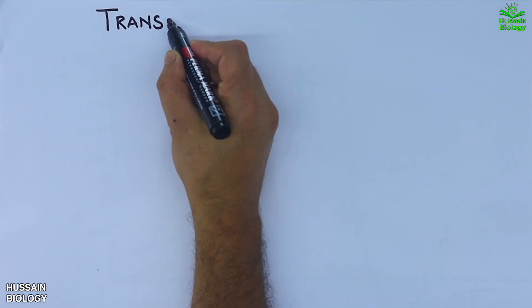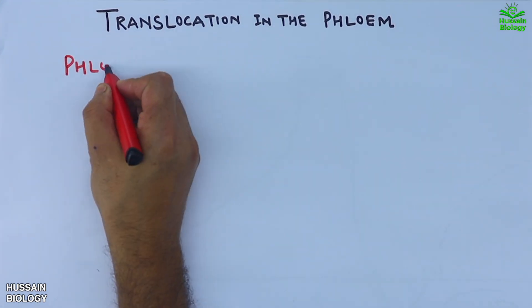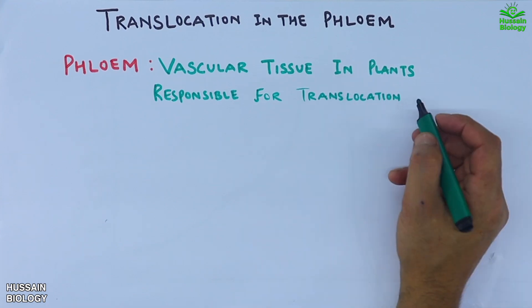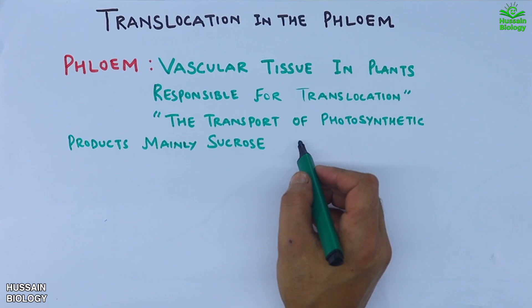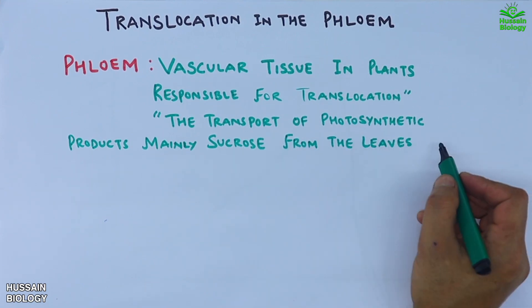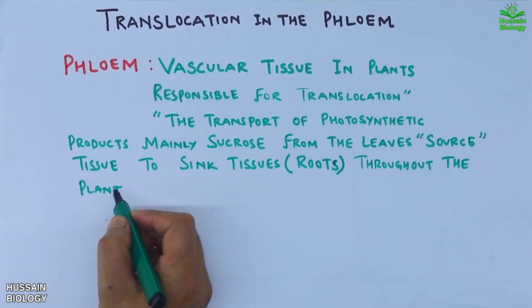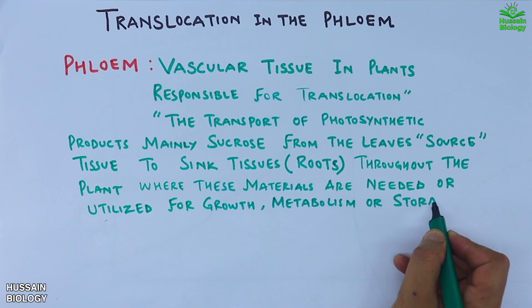In this video we are going to discuss the translocation in the phloem. It involves the transportation of organic compounds from source tissues to the sink tissues within the plant body. Phloem is the vascular tissue responsible for translocation, that is the transport of photosynthetic products — mainly sucrose and other organic compounds — from source tissues, mainly mature leaves, to the sink tissues throughout the plant, where these materials are utilized for growth, metabolism, or storage.